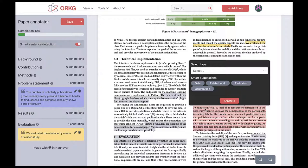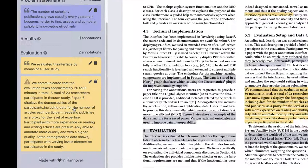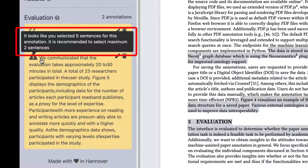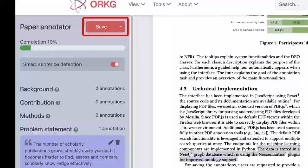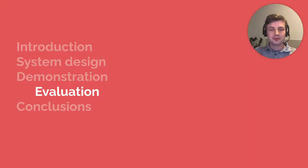In case more than two sentences are selected for a single annotation, a warning will be displayed. This warning informs the user that it is better to annotate a maximum of two sentences. Finally, the result can be saved.